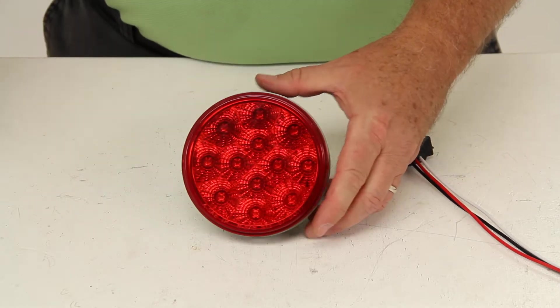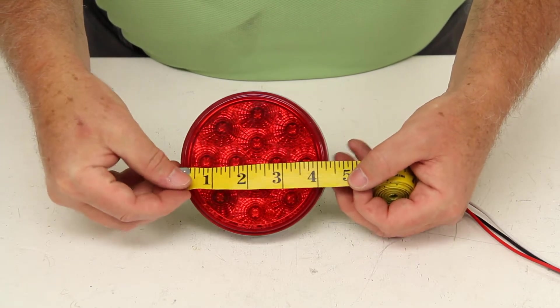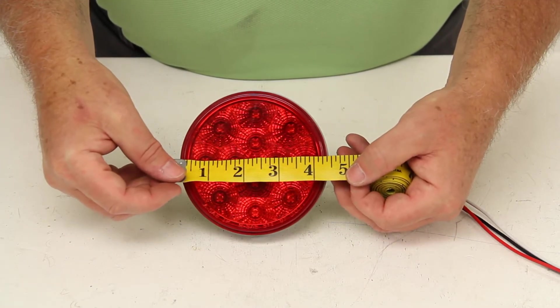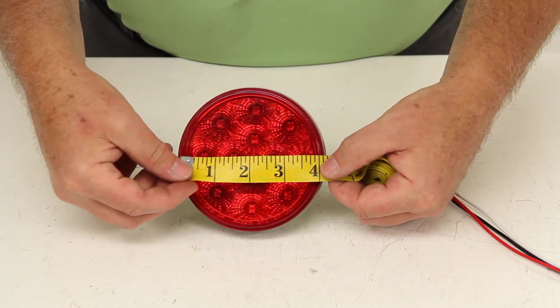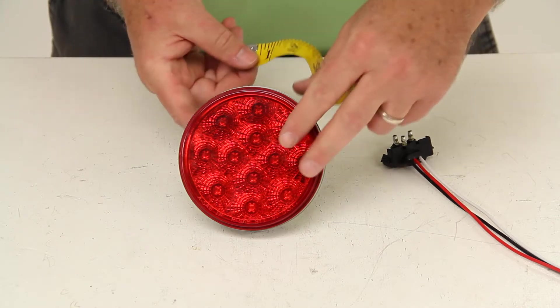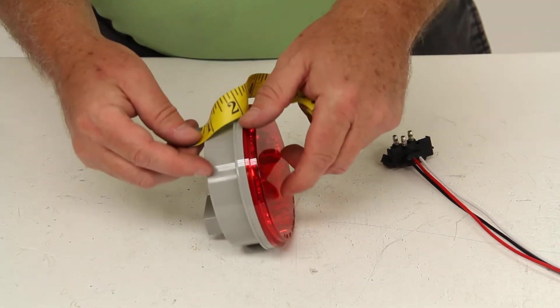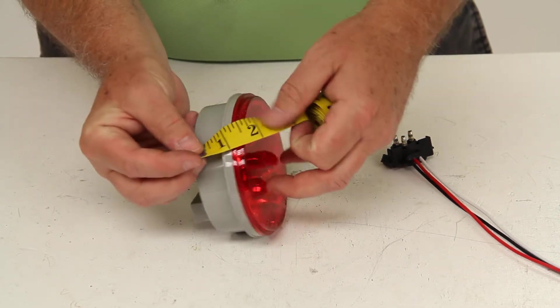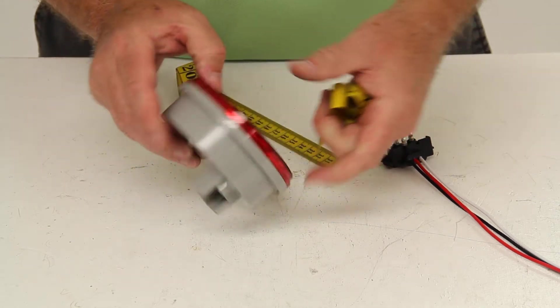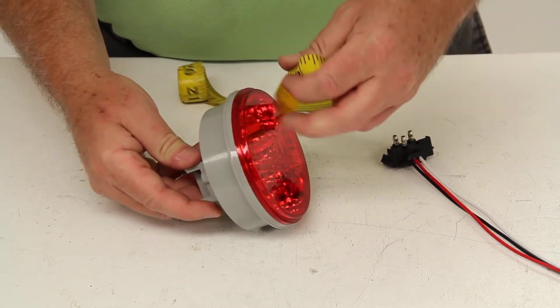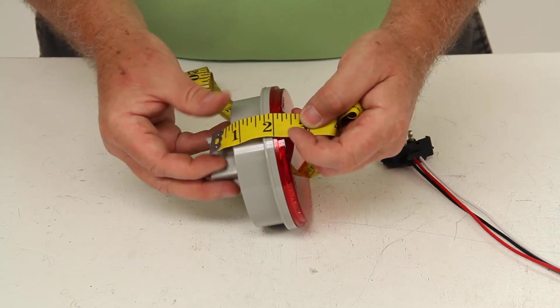The overall diameter from side to side will be 4 and 5 sixteenths inches. The actual size of the light will be 4 inches. The depth on this will be 1 and a half inches, and the depth including the part where the connector goes in will be 2 and 3 eighths inches.